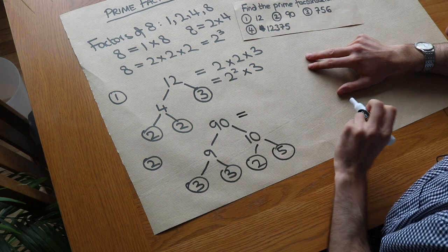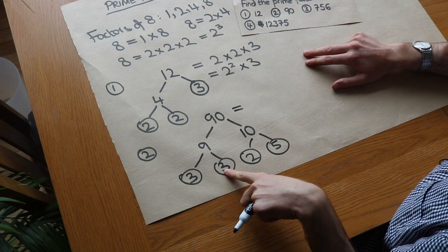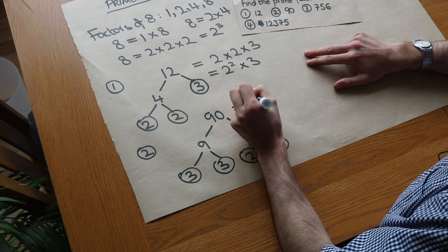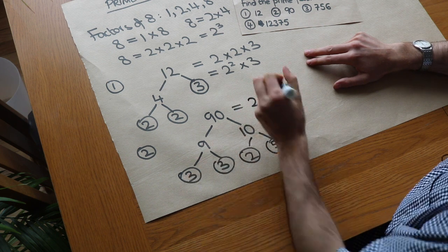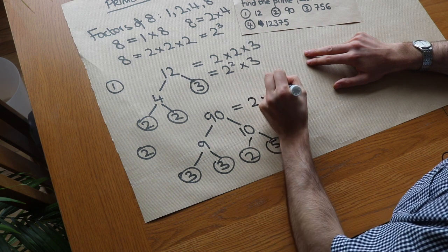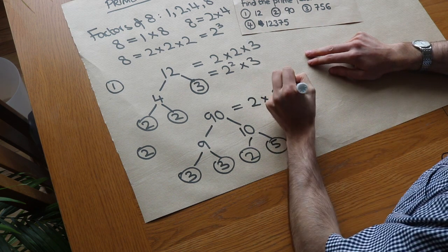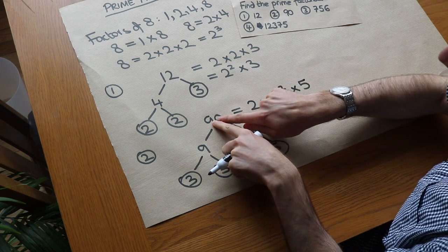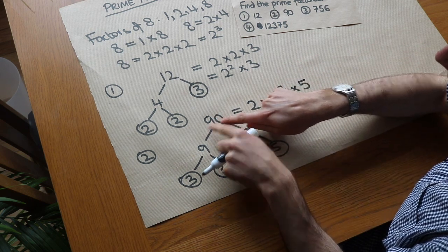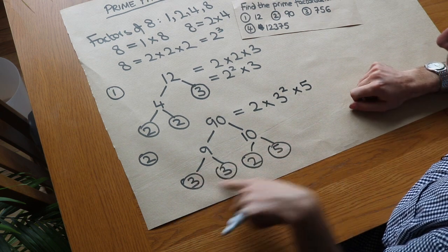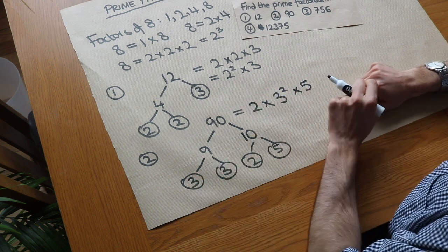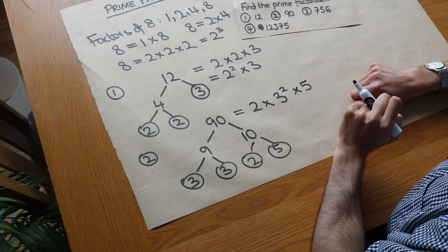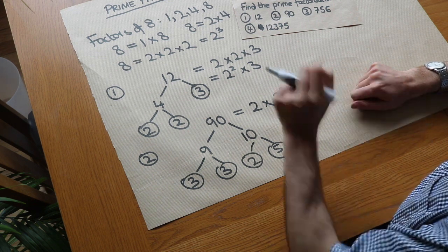And that means 90 can be written as the product of these circled numbers. So let's put them in ascending order. 2 times 3 times 3, which we could write as 3 squared. 3 squared means 3 times 3, and then the 5. And by the way even though we could have split up 90 differently, we could have had say like 30 times 3, we always end up with the same prime factorisation. And the name of that is known as the fundamental law of arithmetic. You don't need to know that, but it is a thing.